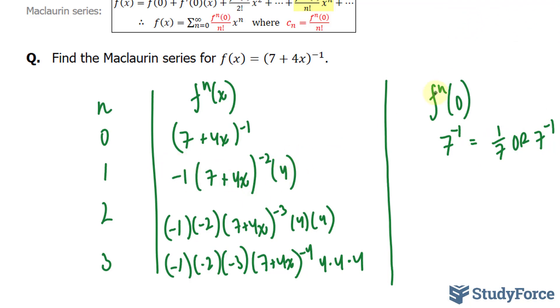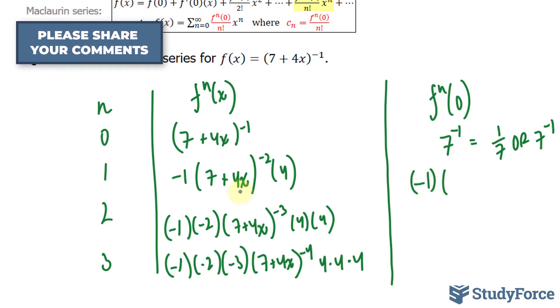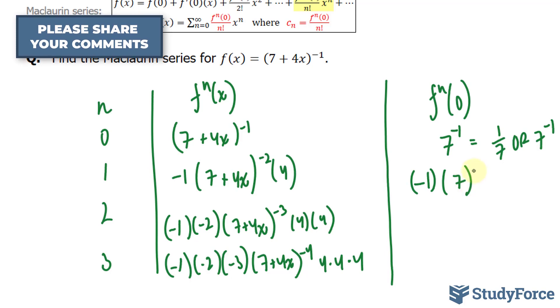If I evaluate this when x is equal to zero, I'll end up with negative 1. This part becomes 7 raised to the power of negative 2 times 4.